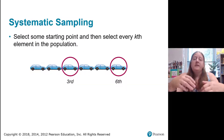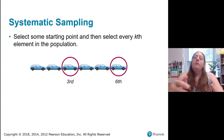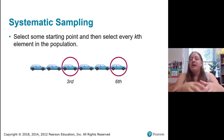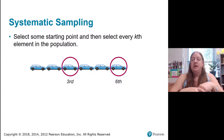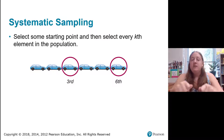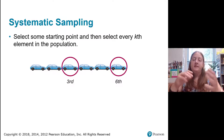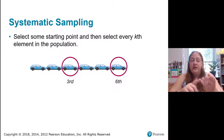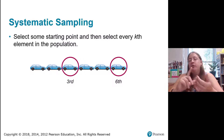Another way we can do sampling is systematic sampling. We choose a number and every time we hit that number counting through the subjects, we select that one — for example, checking every third or every fourth vehicle. That becomes our sample.